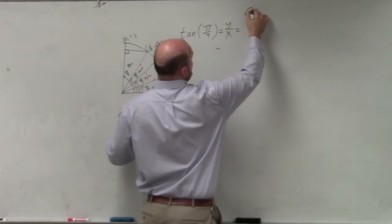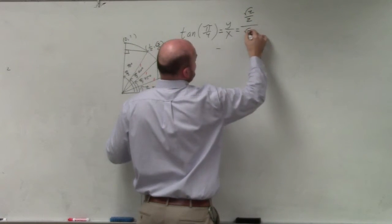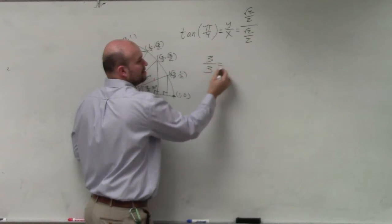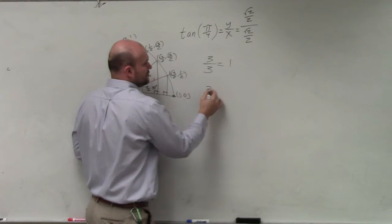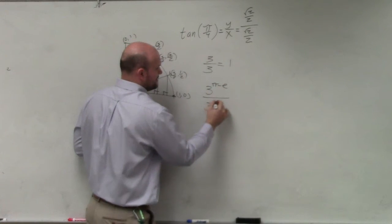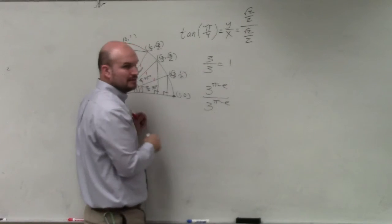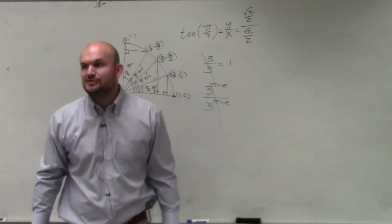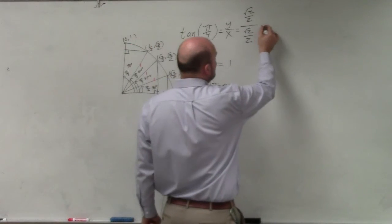So therefore, I have square root of 2 over 2 divided by square root of 2 over 2. Well guys, what's 3 divided by 3? 1. What's 3 to the pi power minus e divided by 3 to the pi power minus e? It's just 1. So square root of 2 over 2 divided by square root of 2 over 2 is just going to be 1.